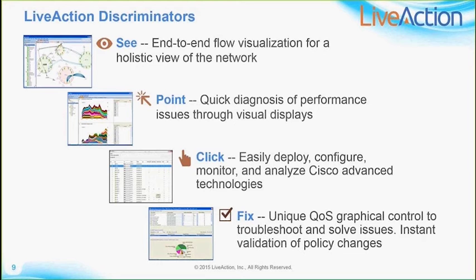LiveAction provides an end-to-end view of your network — you can see it holistically from one end device to another, including flows from a computer, laptop, or server going out to the internet and into a hosted application. The circles in the diagram represent routers and switches, and the lines represent NetFlow. LiveAction also provides easy GUI screens to diagnose problems, spot performance issues with color-coded icons — red, yellow, green — and configuration screens to deploy technologies such as AVC, NetFlow, PFR policies, and QoS policies.